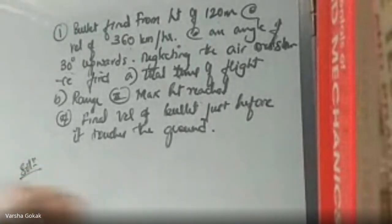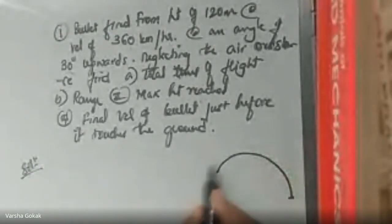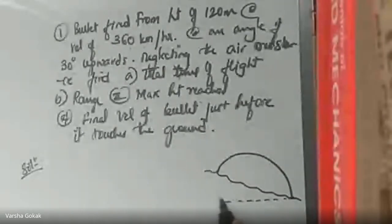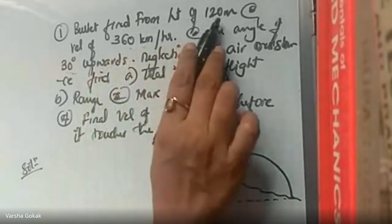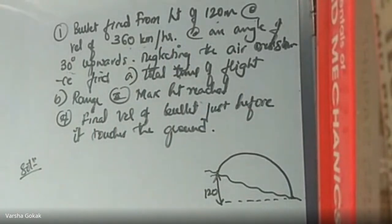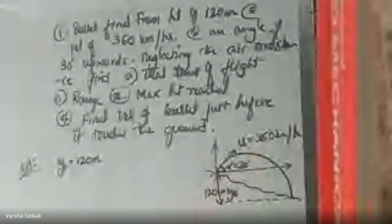Solution: first we draw the diagram. The difference between points A and B is 120 meters, so y-naught is 120 meters. Setting up the x and y axes, U is 360 km per hour, alpha is 30 degrees upward.